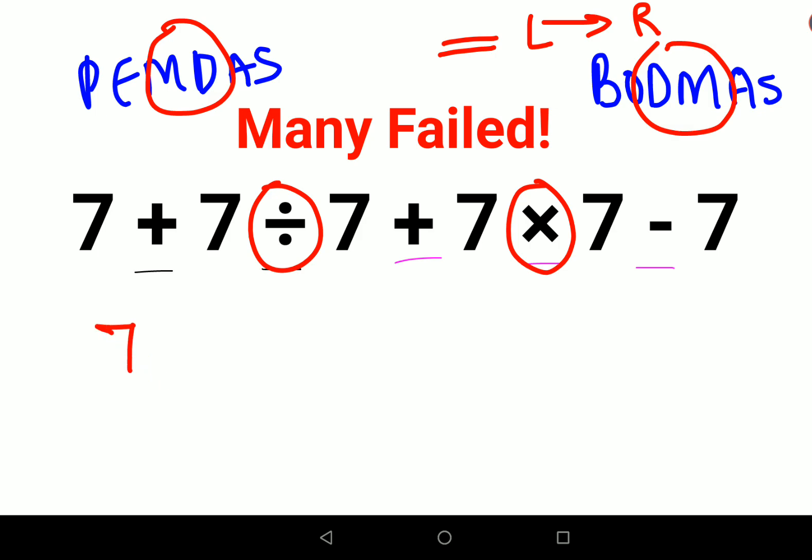So first we will keep the 7 plus as it is. Now 7 divided by 7 that is nothing but 1. Plus will remain as it is. Then 7 into 7 gets you 49 minus 7.